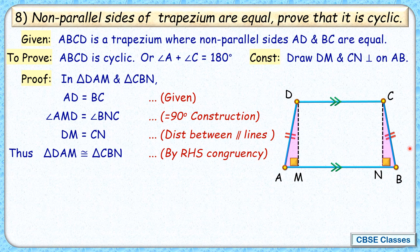As both triangles are congruent, we can say that corresponding parts will be equal, or angle A will be equal to angle B by CPCT.